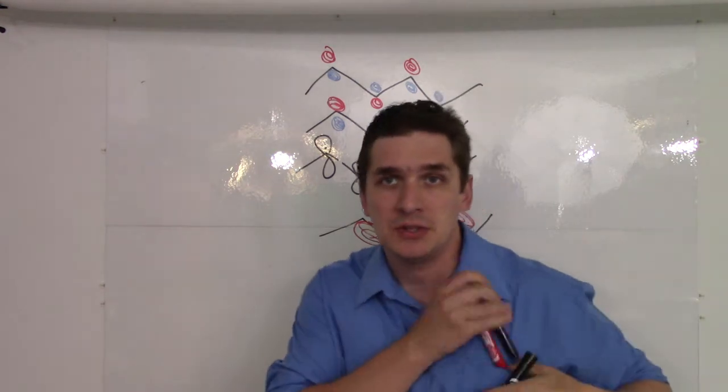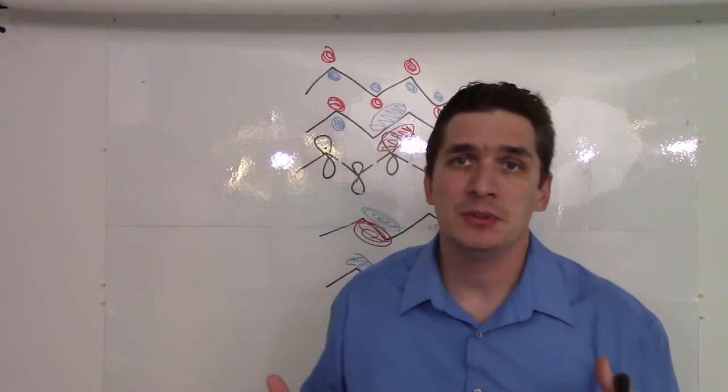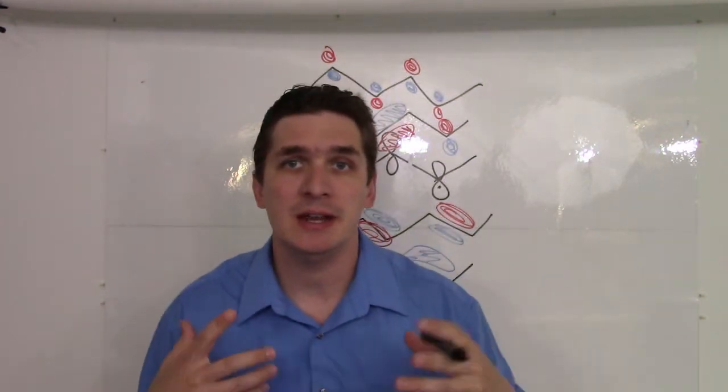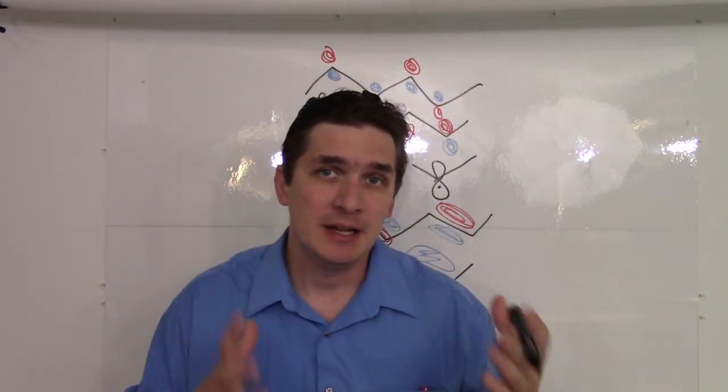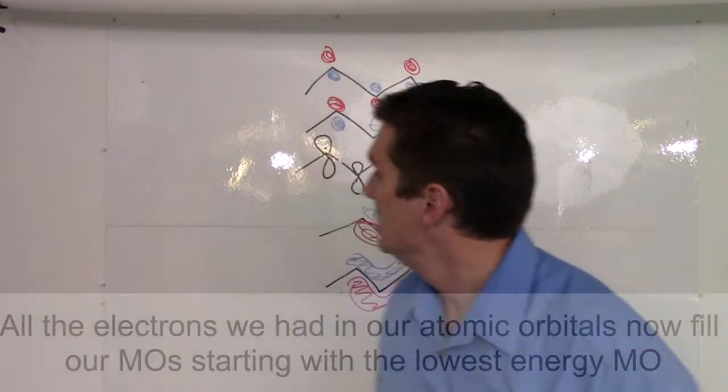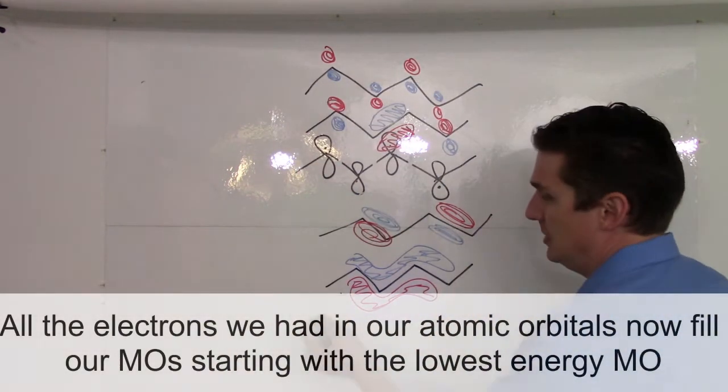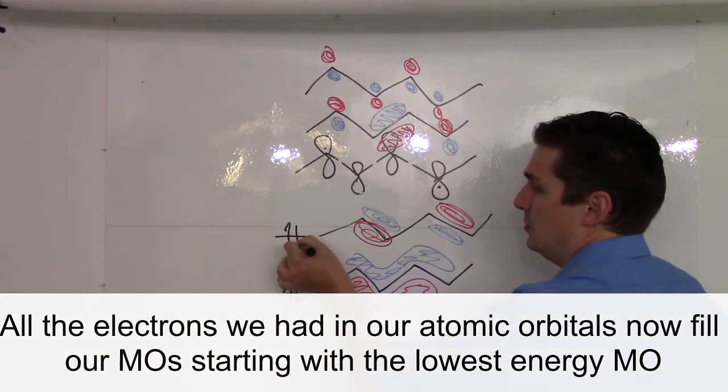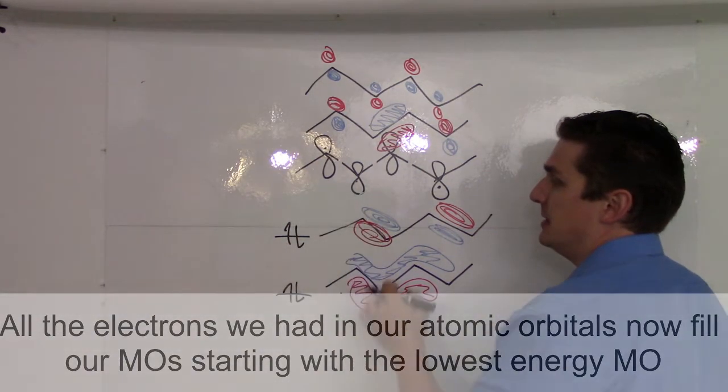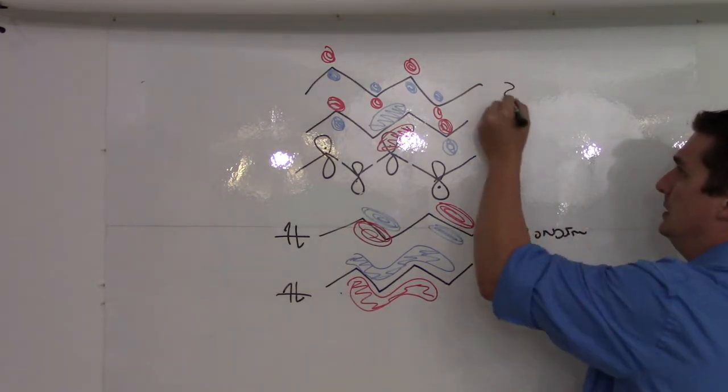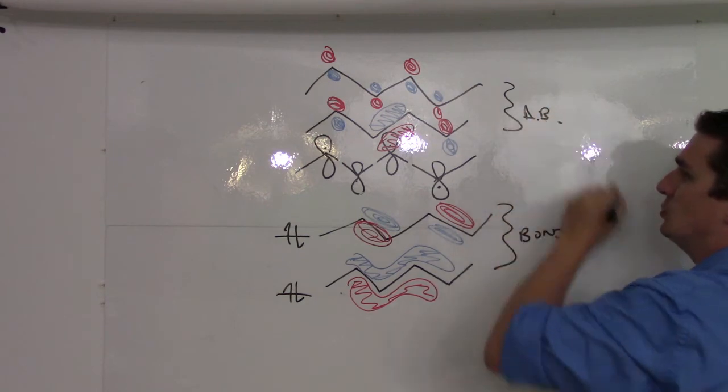Now, another thing about molecular orbital theory is we have to take all the electrons we started with as well. So, each of these p-orbitals contains one electron. Now, like atomic orbitals, we can hold up to two electrons in each molecular orbital. So, if we've got four here, we're going to end up with two electrons in this phase and these phase. These are going to be our bonding, and these are going to be our anti-bonding orbitals.